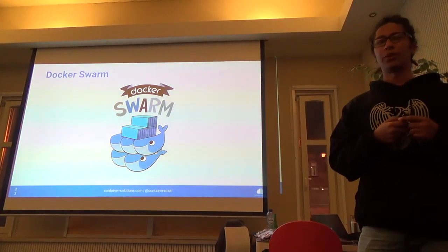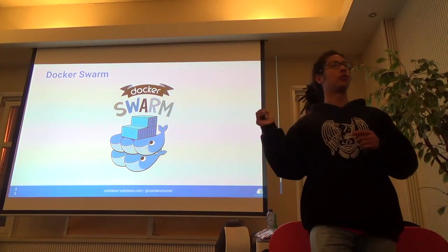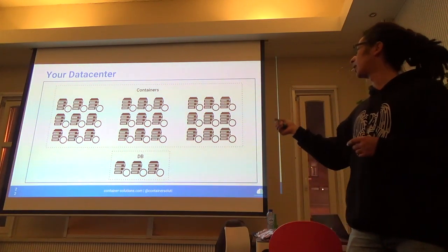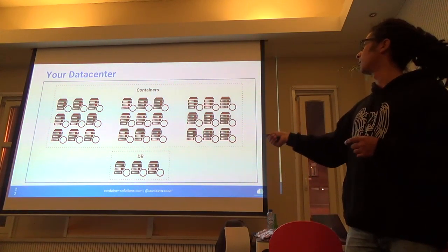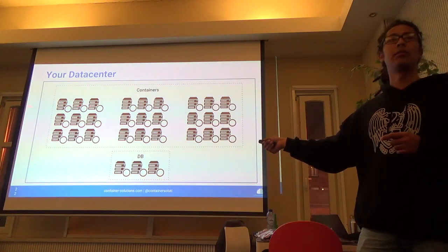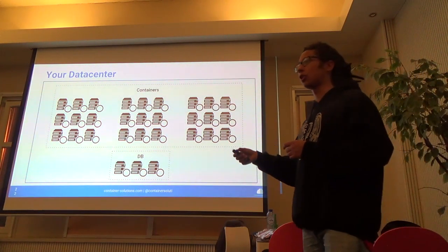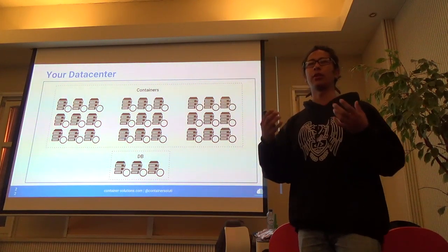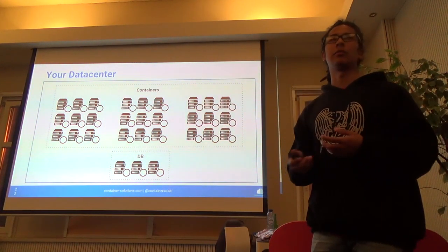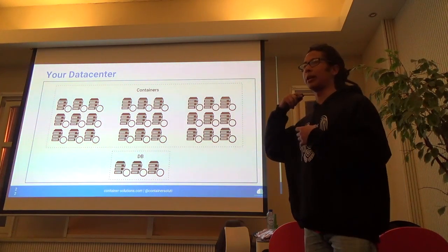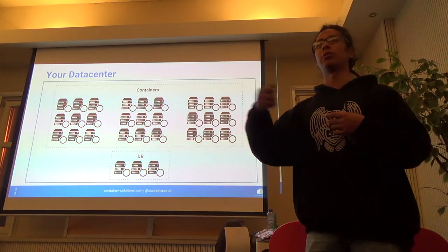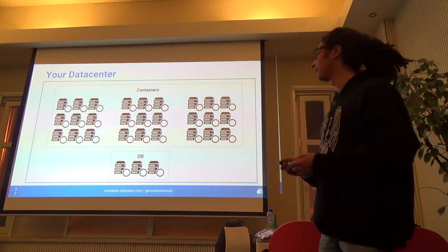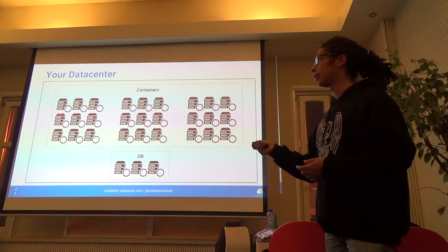This is where Docker Swarm wants to help you. You have your data center with a bunch of hosts running Docker. For the sake of this talk, let's pretend we have a containerized, stateless application that can be deployed anywhere, receiving via environment variables the address of the database, cache servers, and microservices it needs to talk to. How do you deploy it?